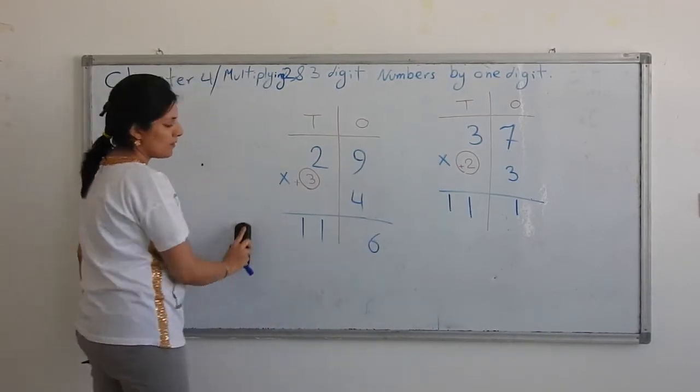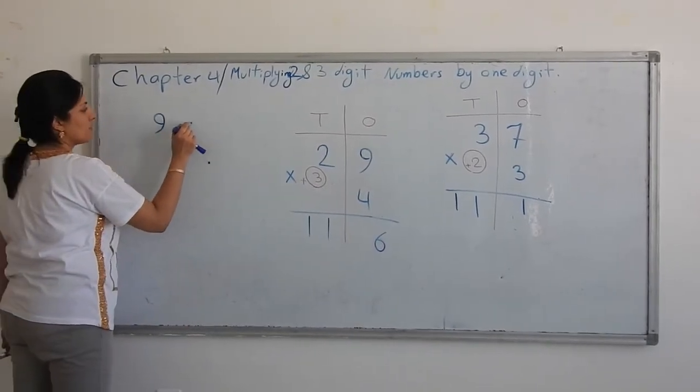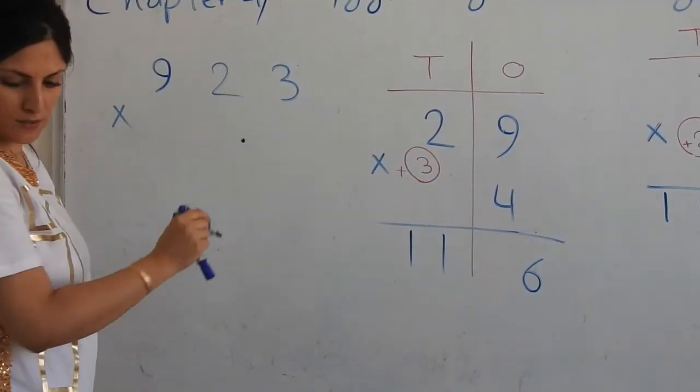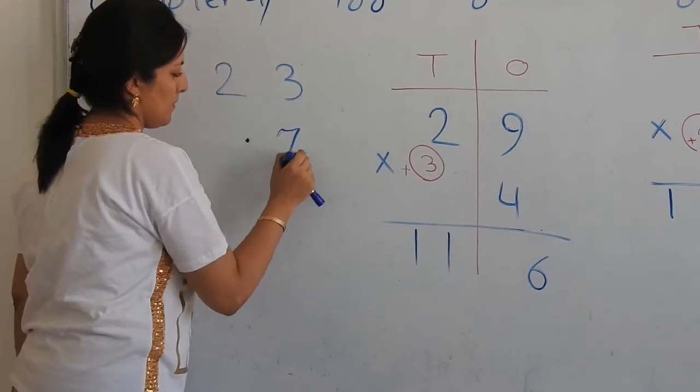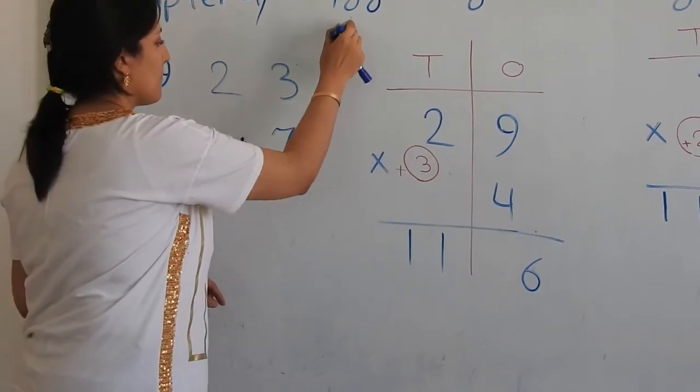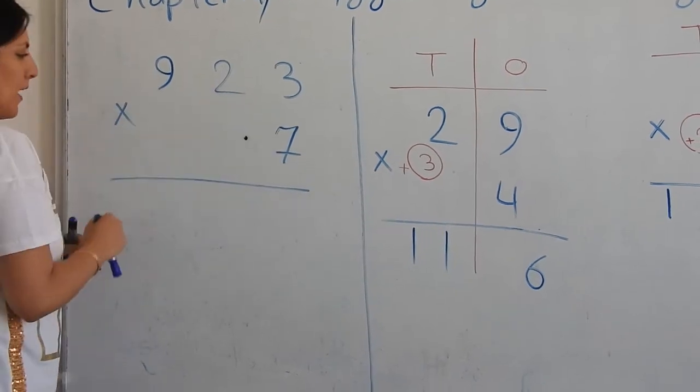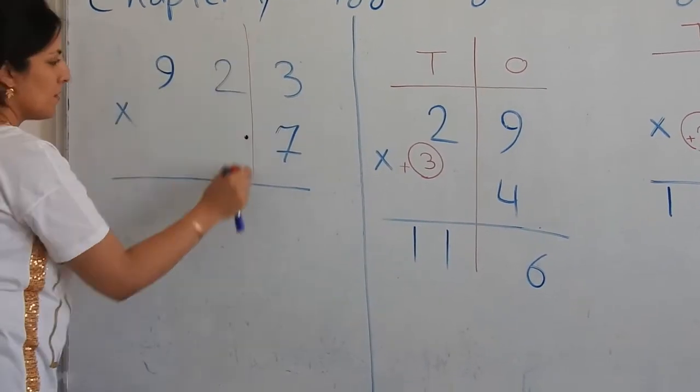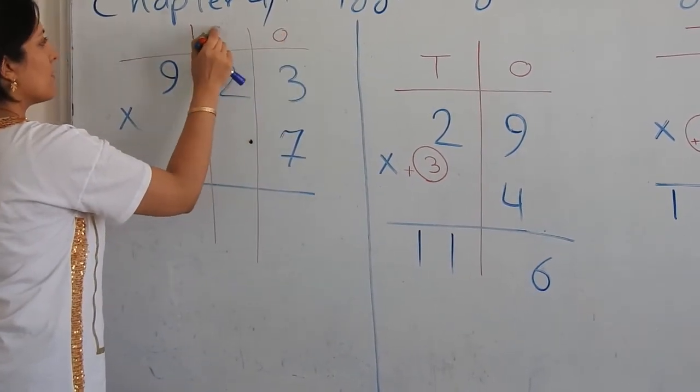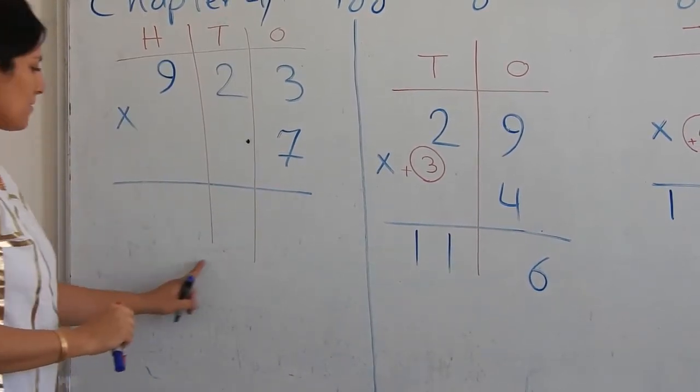Let's go to a three digit number. 923 times, let's say, seven. Again we have same process, but this time we have three digit number. Ones, tens, hundreds. We have ones, tens and hundreds this time.